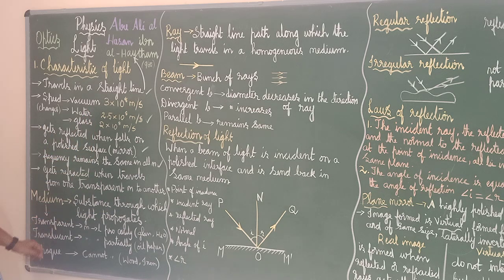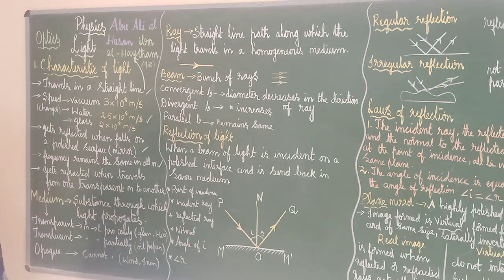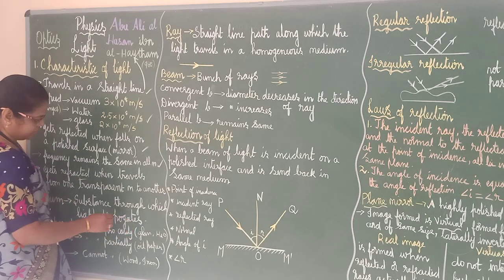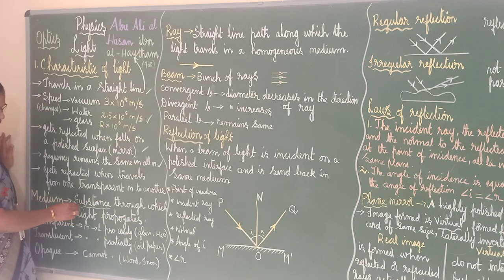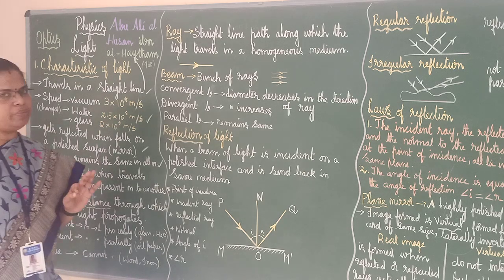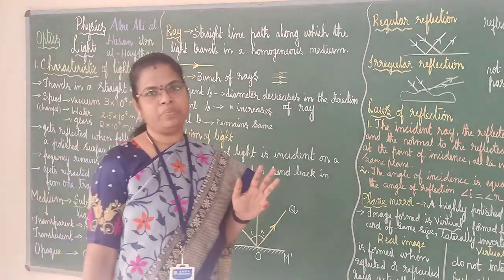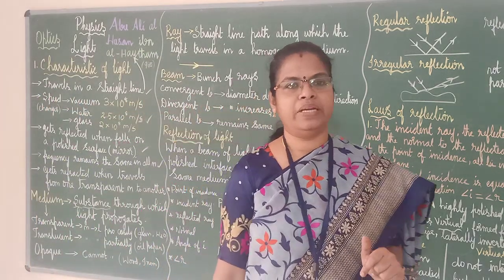What is a medium? The substance through which light propagates or travels is called a medium. We have studied three mediums: transparent medium, translucent medium, and opaque medium.